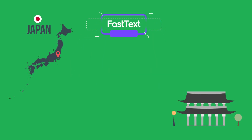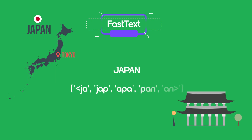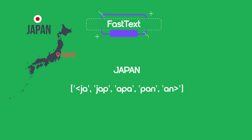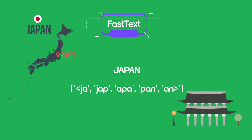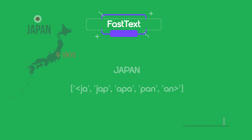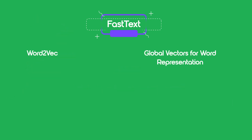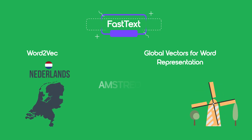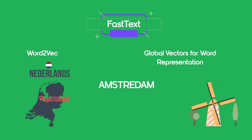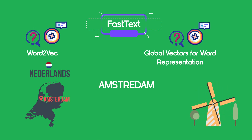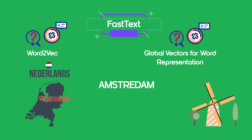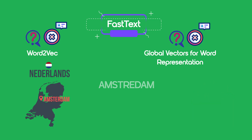What does FastText bring to the table? FastText takes word embeddings to the next level by looking at subword units, which are parts of words. This makes it better at handling rare words, typos, and morphologically rich languages like Romanian or German. In the case of Word2Vec and GloVe, if a word is misspelled, it won't be recognized, as these models rely on exact word matches, so any variation or typo will result in an unknown word.